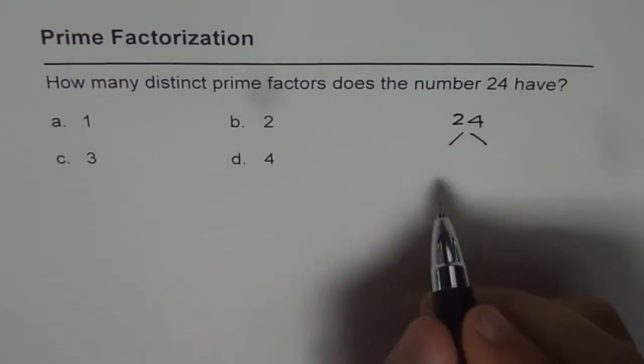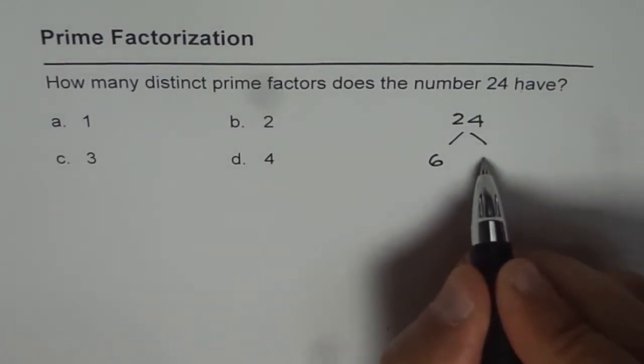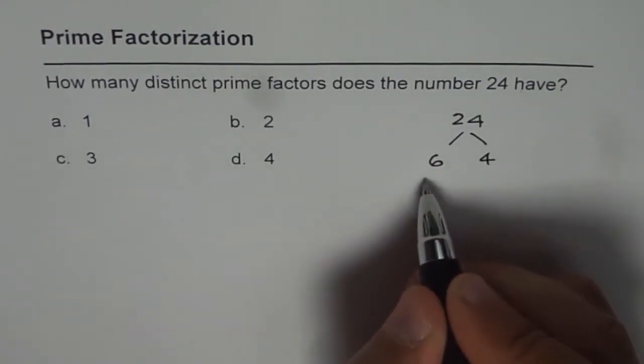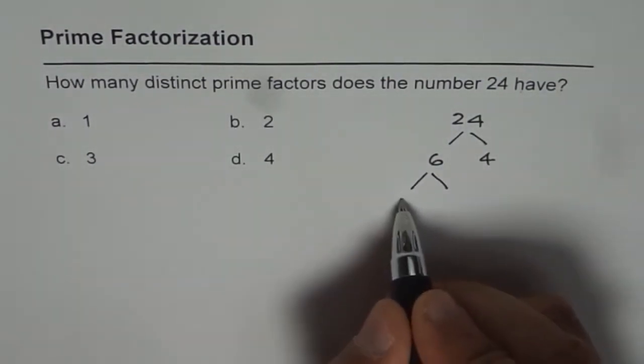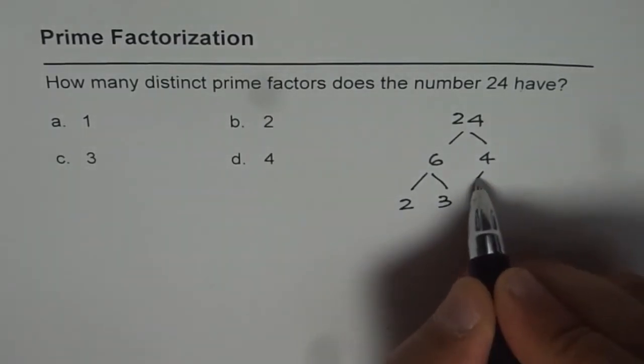So 24, we can write this as 6 times 4. And 6 you could write as 2 times 3. 4 is 2 times 2.